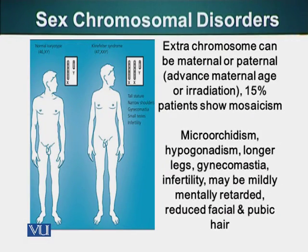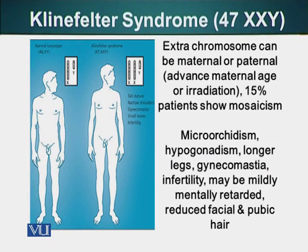Let's talk about Klinefelter syndrome. The karyotype of these patients is 47XXY, or it could also be 48XXXY. As the number of X chromosomes increases, so does the severity of disease or mental retardation. Although one of their X chromosomes is normal, the other extra X chromosomes are always converted into Barr bodies — they are condensed, but although condensed, they are not completely inactive. The extra chromosome in people with Klinefelter syndrome can be maternal or paternal.